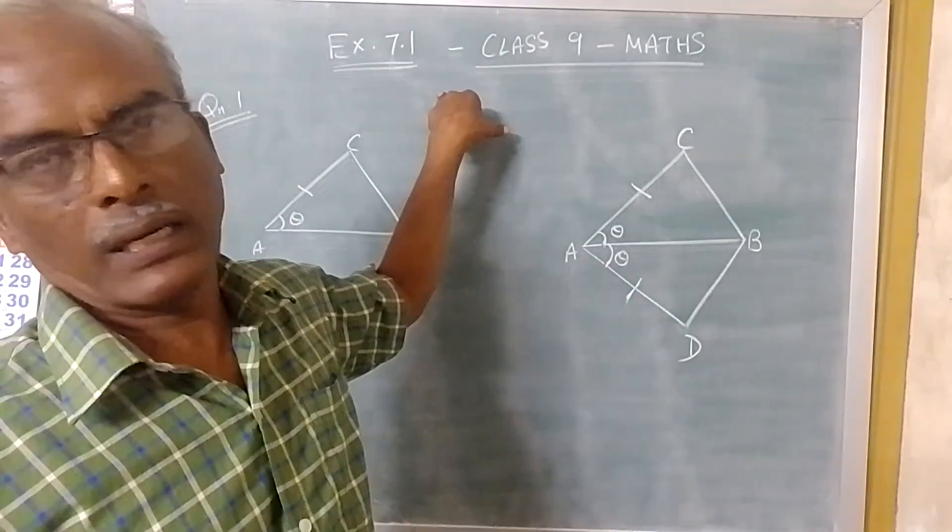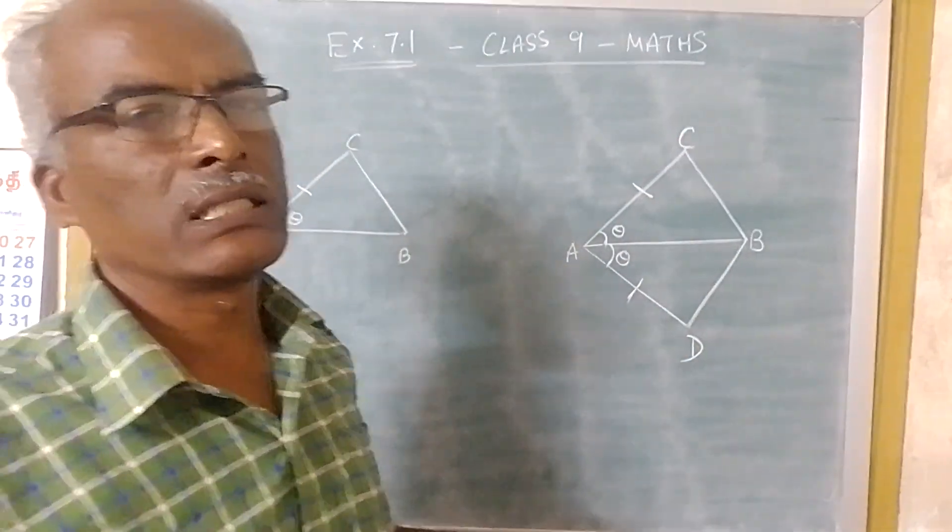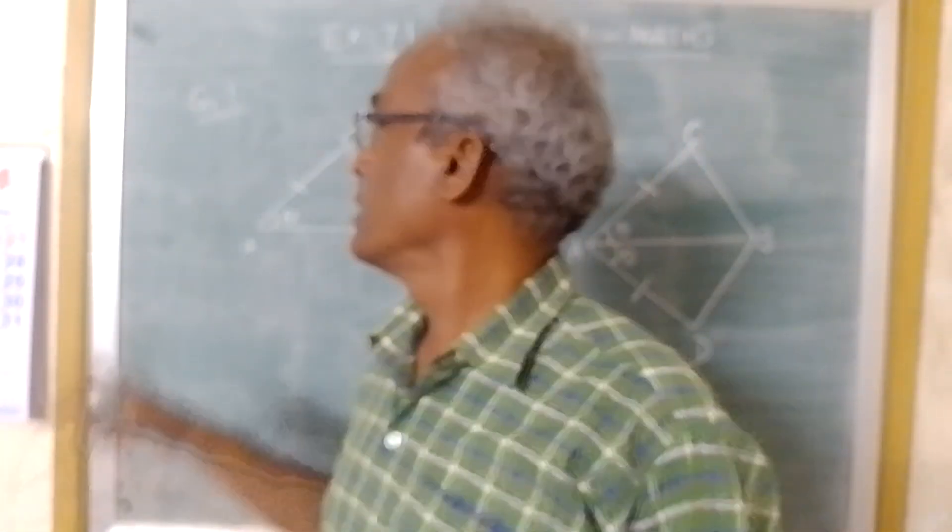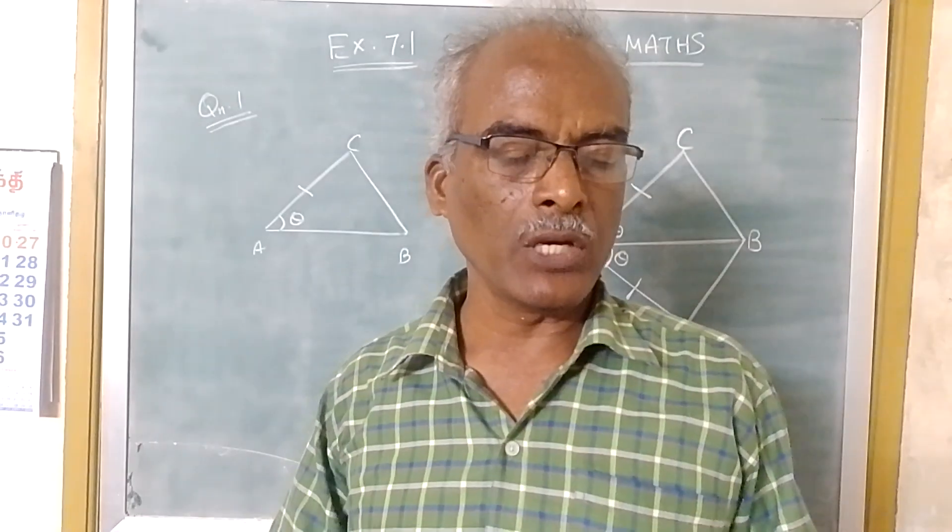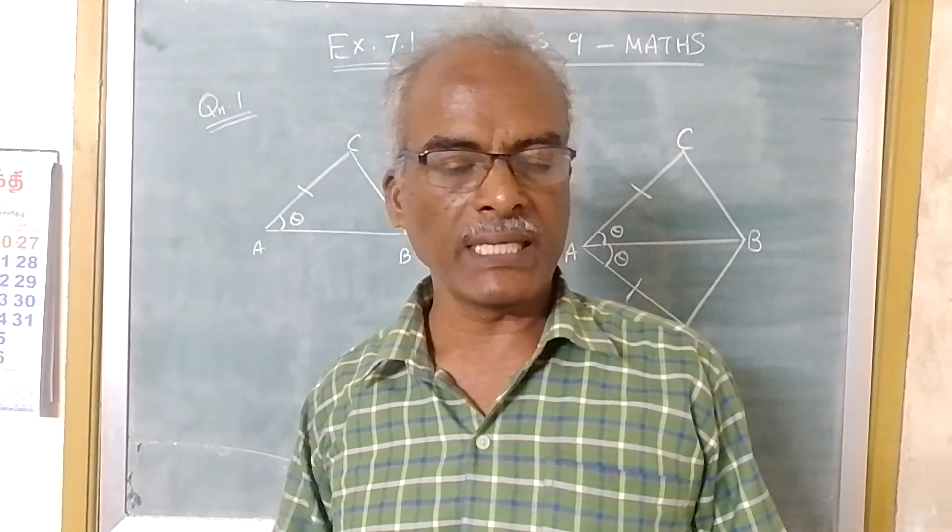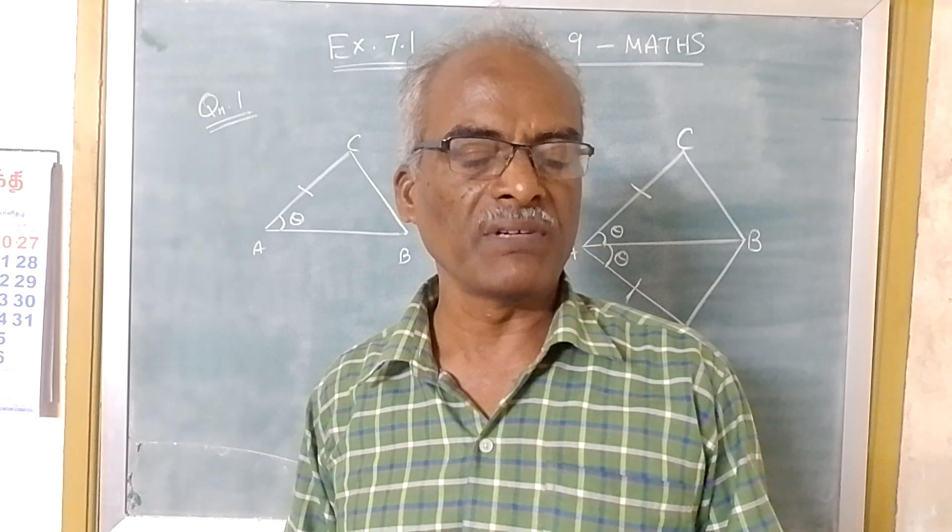Exercise 7.1, Class 9 Maths, NCERT Syllabus, Question Number 1. In quadrilateral ACBD, AC is equal to AD, and AB bisects angle A. See figure 7.16.